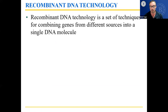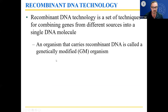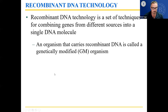For example, you could put a gene for glowing in the dark from jellyfish into mice, and they've done that — that's recombinant DNA. An organism that carries recombinant DNA is called a genetically modified organism, or GMO. Those three letters, GMO, mean genetically modified organism.